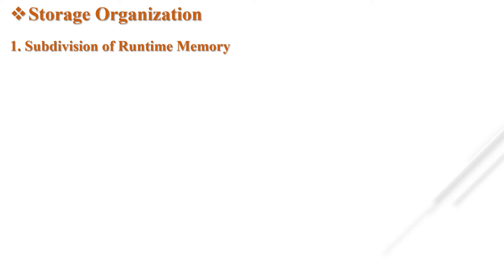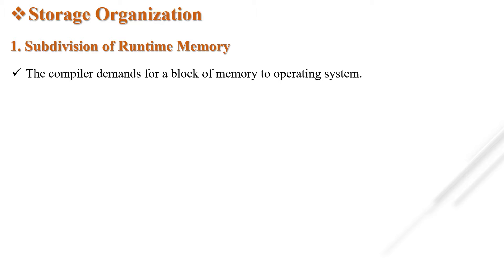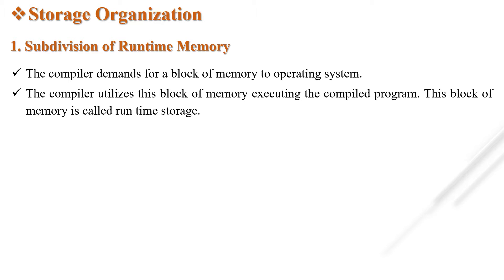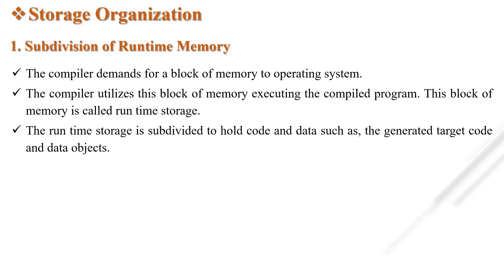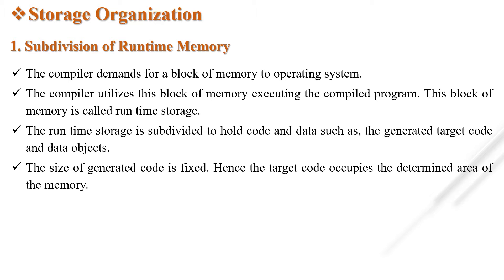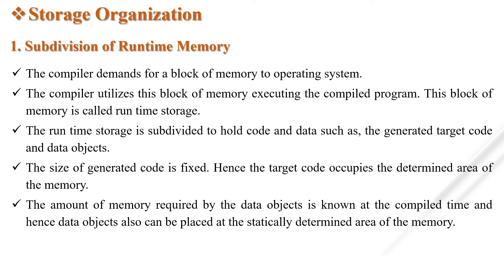The first storage organization method is subdivision of runtime memory. When compiling any program, the compiler demands a block of memory from the operating system. The compiler utilizes this block of memory for executing the compiled program, and this block is known as runtime storage. The runtime storage is subdivided to hold the code and data such as the generated target code and data objects. The size of generated code is already fixed, so the target code occupies a determined area of memory. The amount of memory required by data objects is known at compile time, and hence data objects can also be placed at a statically determined area of memory.